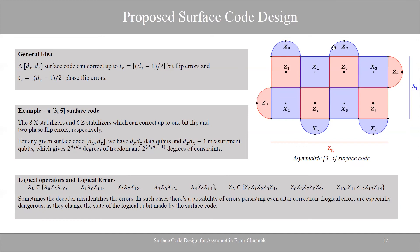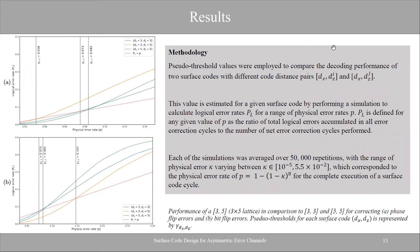By adjusting the shape of the rectangle to the noise asymmetry, we tailor the code to the noise environment. The logical operators are represented along the edges of the lattice. To summarize the design: a 3×5 surface code has a stabilizer acting on qubits 0, 5, and 10 in reading order. Now for the results: we try to find the threshold and pseudo-threshold while varying noise asymmetry and code distance — comparing 3×5, 3×7 codes against symmetric 3×3 and 5×5 codes.